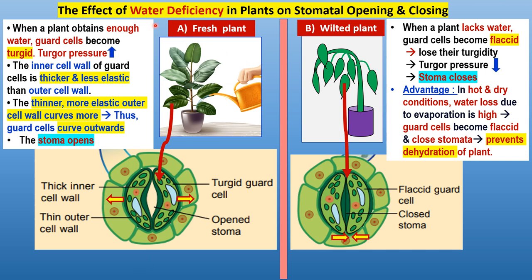When a plant obtains enough water, guard cells become turgid and full of water; turgor pressure in the cell increases, the vacuoles press on the cell walls. The thinner, more elastic outer cell wall curves outward more than the thicker less elastic inner wall, causing the whole guard cell to curve outward. Both guard cells curving outward will open the stoma when the guard cells are in a turgid condition.